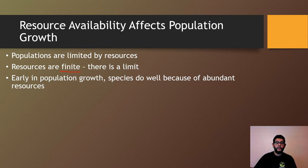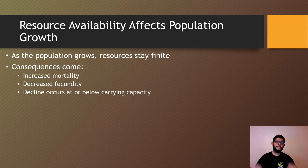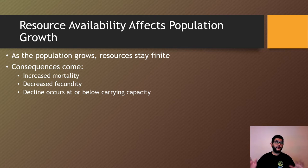Most early populations, when they grow, they're going to do well because there's seemingly an abundance of resources. But that may not be the case throughout the whole time, because what will happen is the population will grow but the resources will stay the same. So if we're talking about an island, there's only going to be so many trees, so much grass to eat, or so much space to lay eggs for a nest if you're a bird. As the population grows, if it grows too quickly, there are going to be consequences.